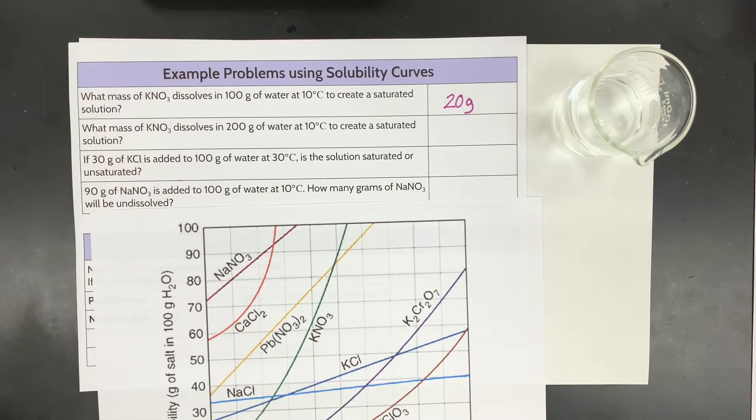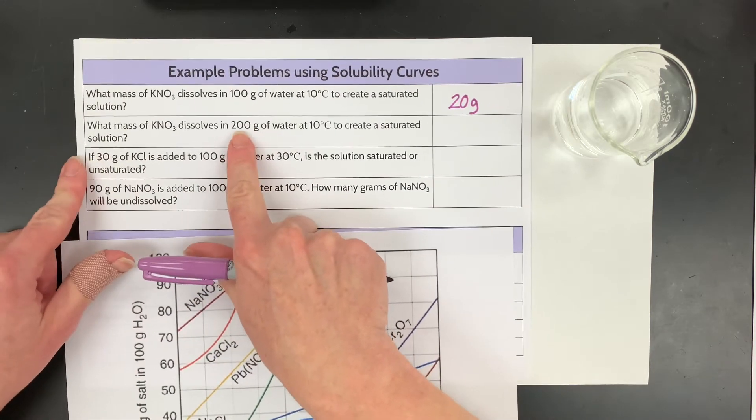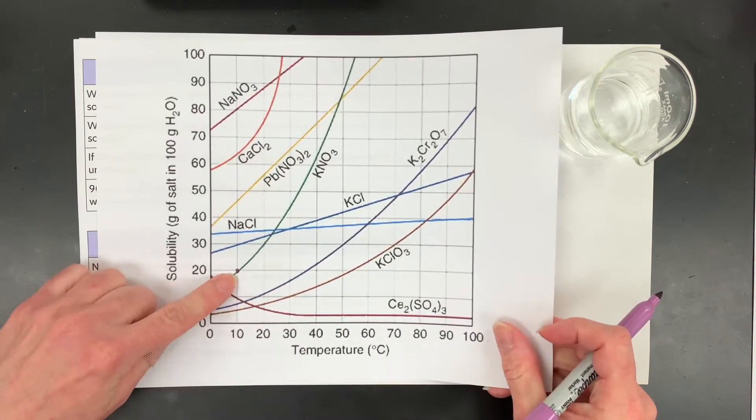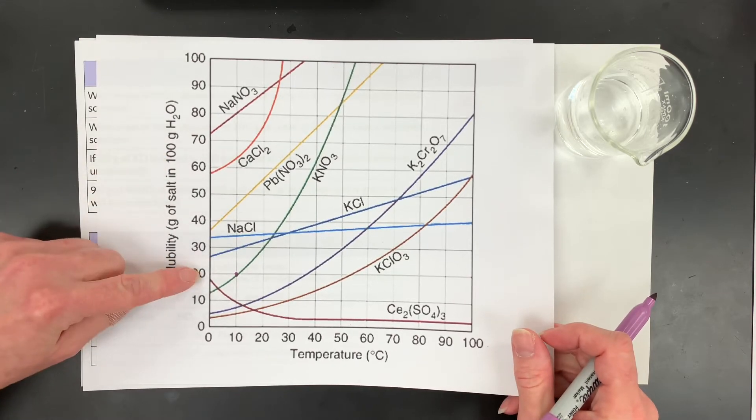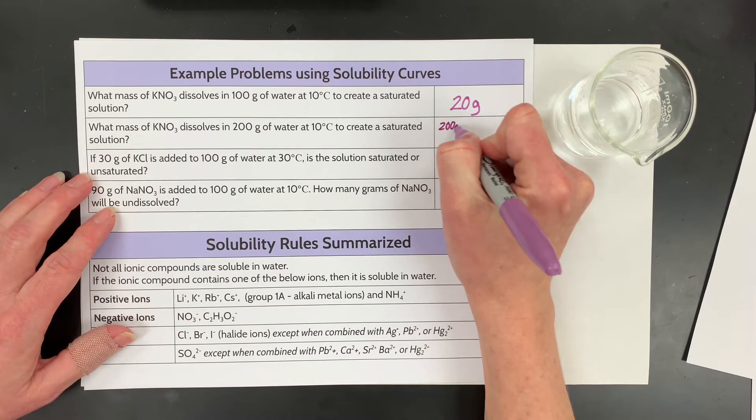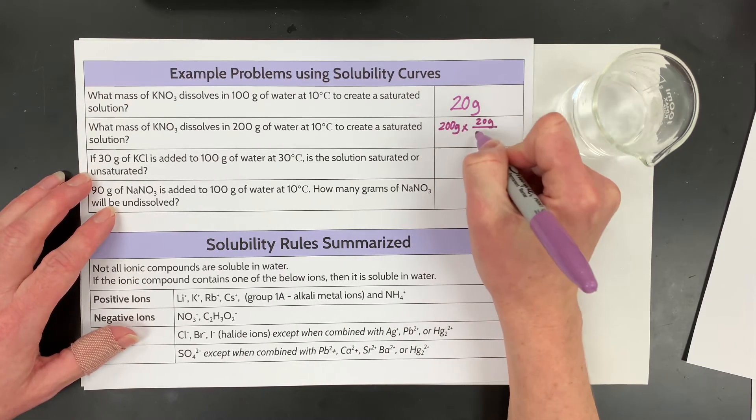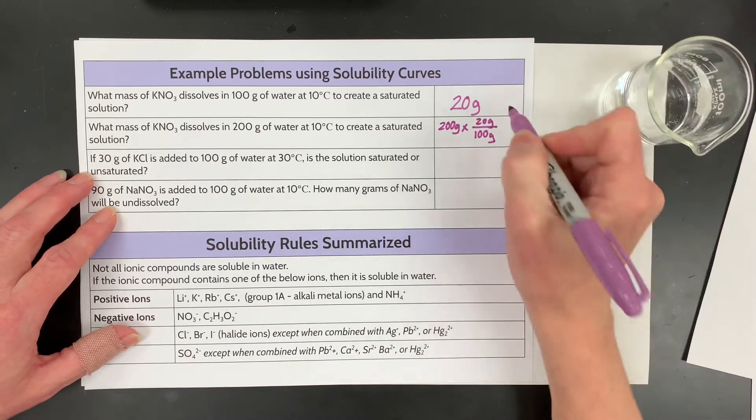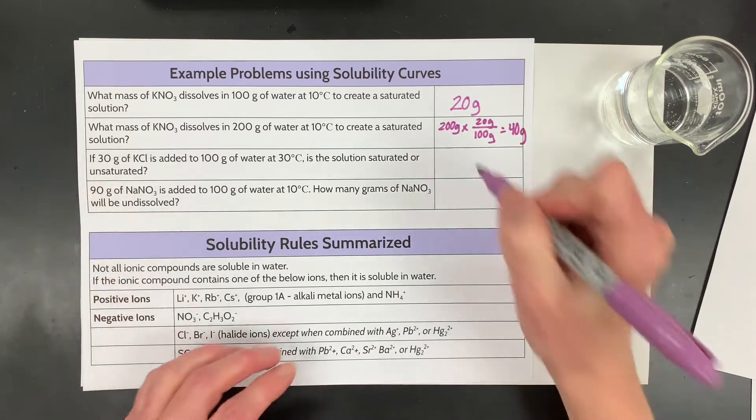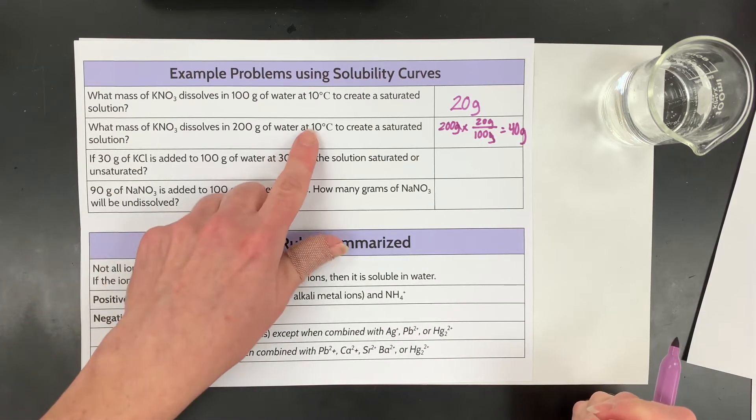All right, now remember that was in 100 grams of water. So what if the question said what about 200 grams of water, same temperature? So that means we're still here but this went up, so we can dissolve double of that. So kind of do a little math problem here, 200 grams, and then I kind of multiply it by the fact that 20 grams could be dissolved in 100 grams, but it's basically going to get me to the answer that this is 40 grams that I can dissolve because I can put in double because I have double the amount of solvent, so I can put in double the amount of solute at that specific temperature.